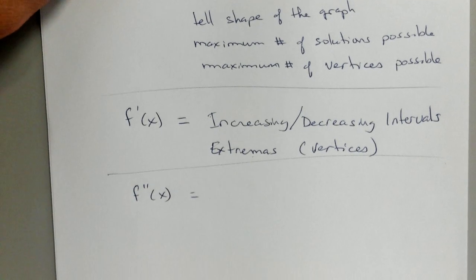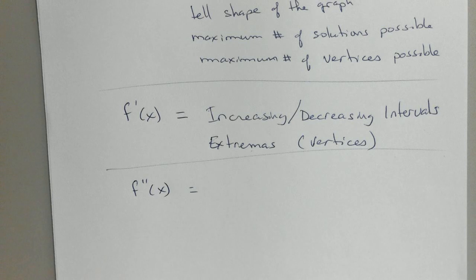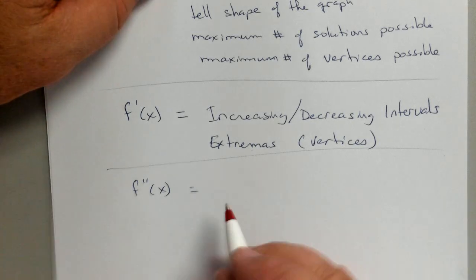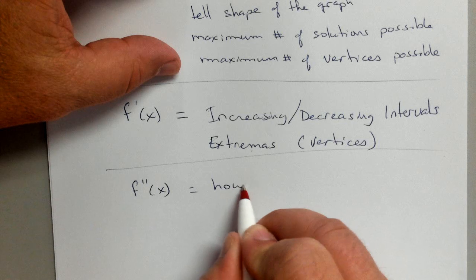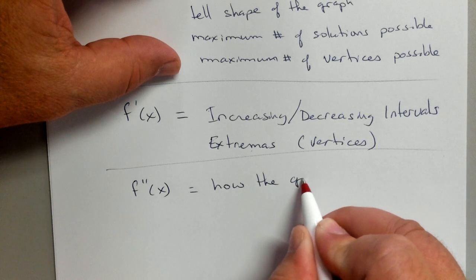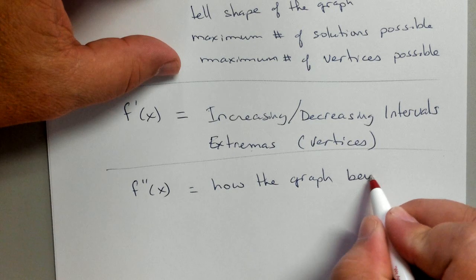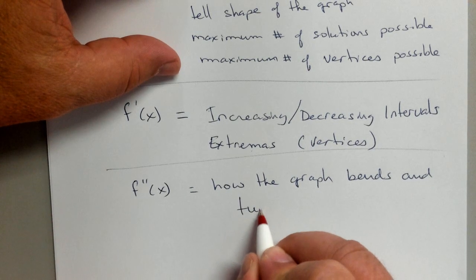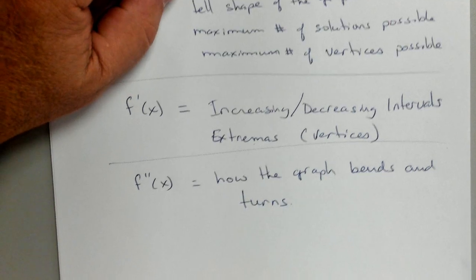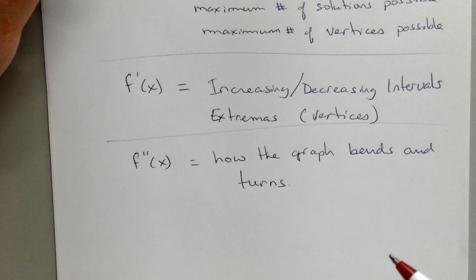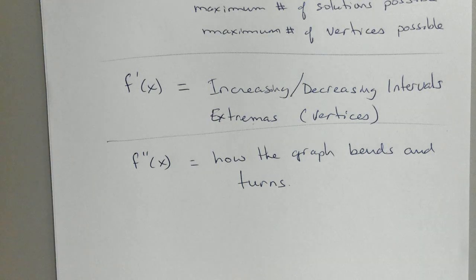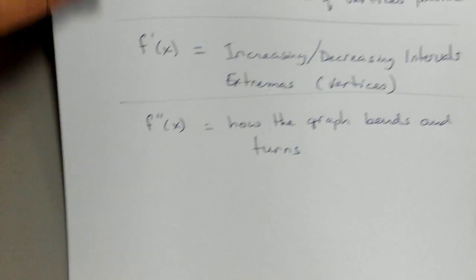So now we venture into another domain — that of the second derivative. The second derivative tells us how the graph bends and turns. The first derivative only tells us if it's increasing or decreasing. The second derivative now tells us exactly what the shape is going to look like.